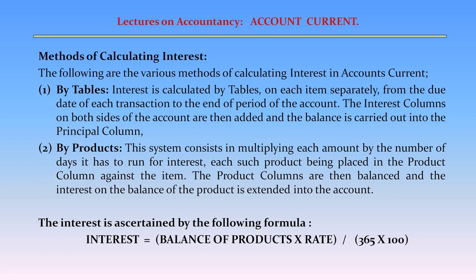Methods of Calculating Interest. The following are the various methods of calculating interest in account current. Method 1: By Tables. Interest is calculated by tables on each item separately from the due date of each transaction to the end of the period of the account. The interest columns on both sides of the account are then added and the balance is carried out into the principal column.